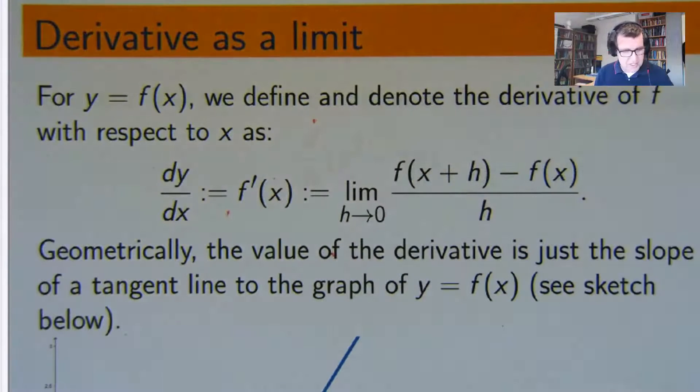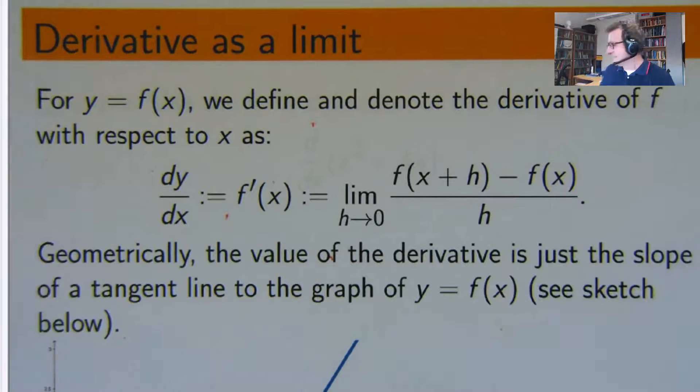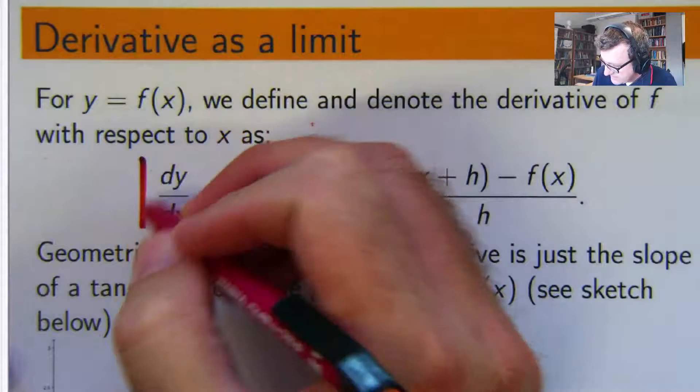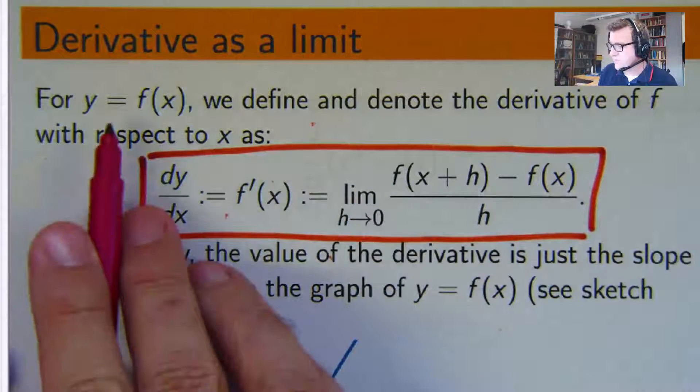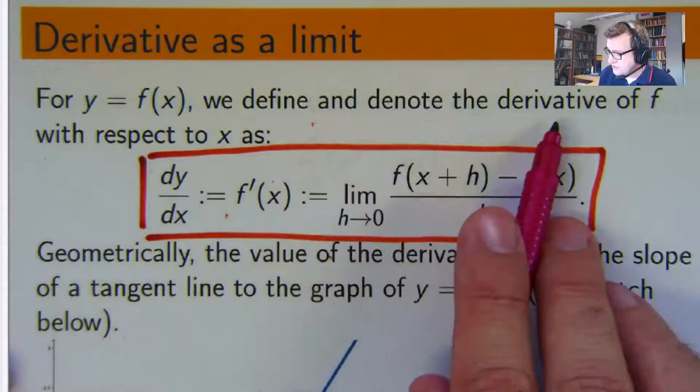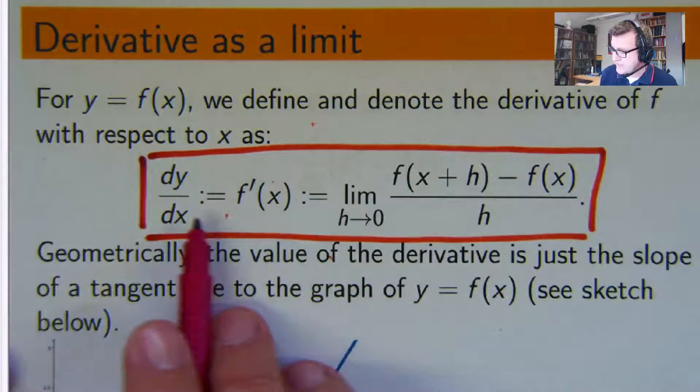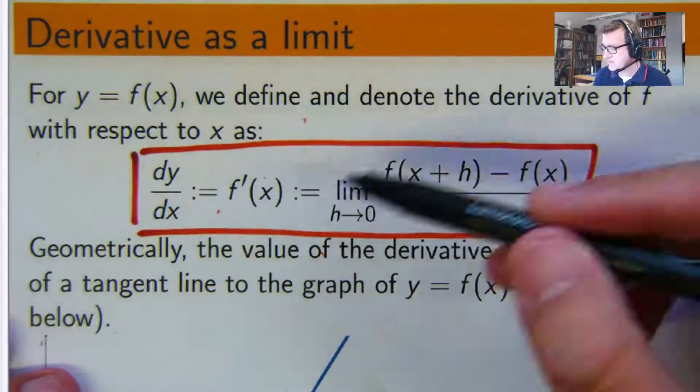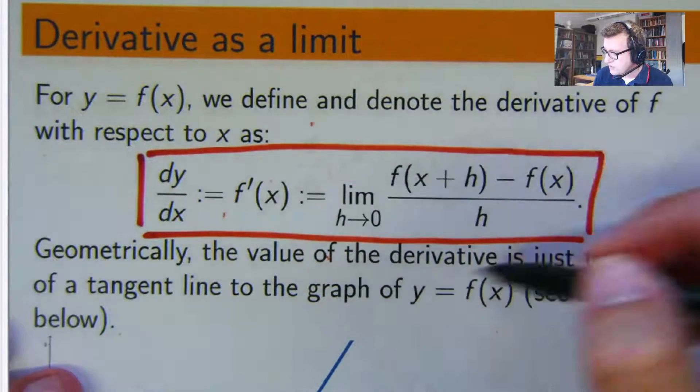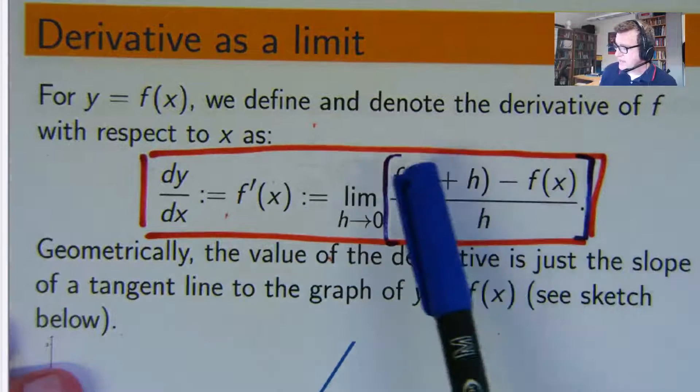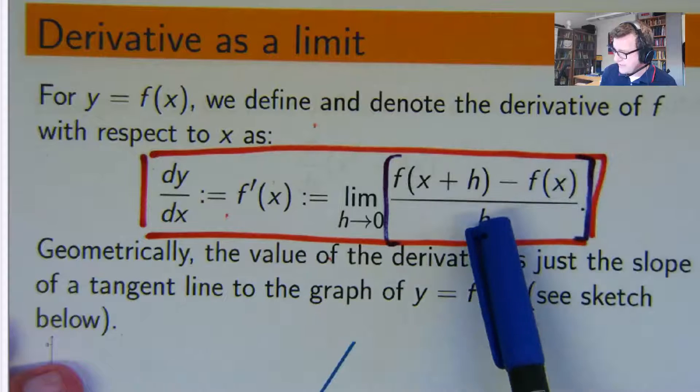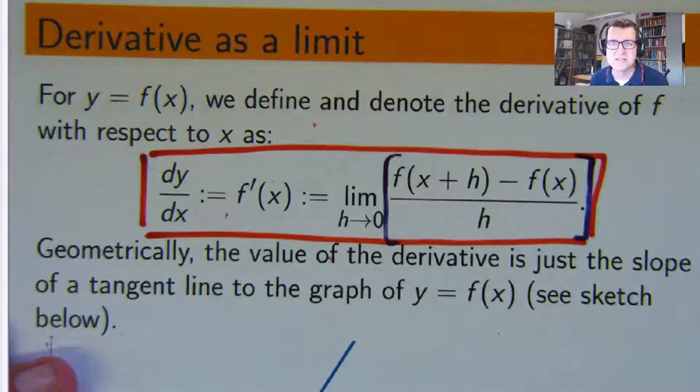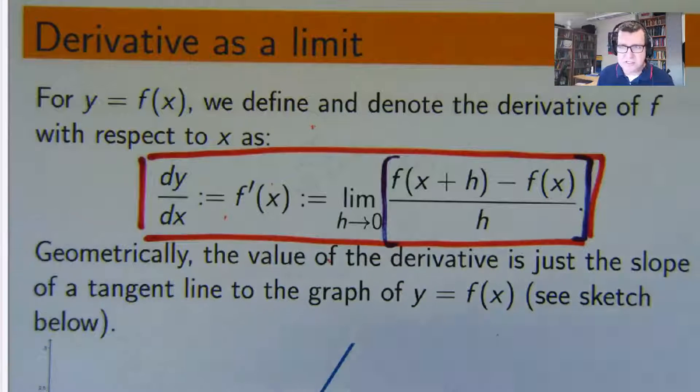In previous videos we looked at these limit type ideas and limits are central to calculus. You can't have calculus without a limit, but this is a lot for somebody to take in. So for y equals a function of x, we define and denote the derivative of f with respect to its variable x as the following. So first we have these dy dx's here or f dash of x and essentially it is the limit of this difference quotient. So you've got f of x plus h minus f of x all over h and you take the limit as h approaches 0.